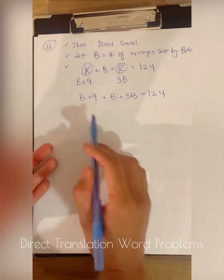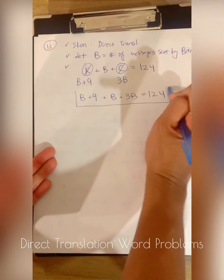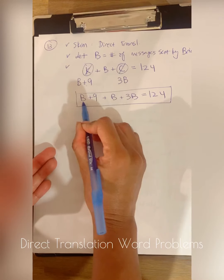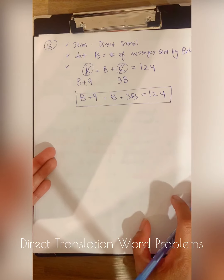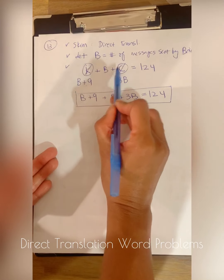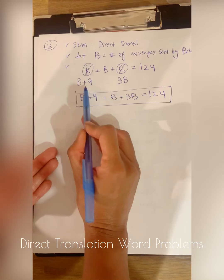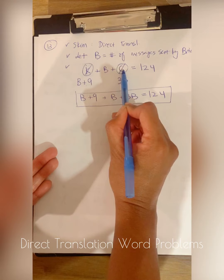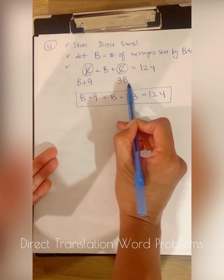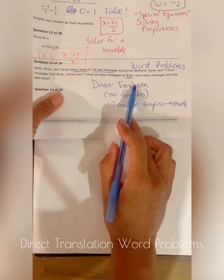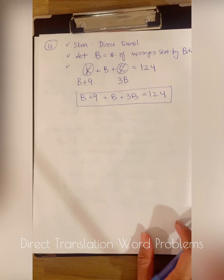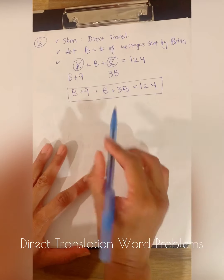So by doing that, I've now created one equation with the unknown values of B's. So instead of putting K plus B plus C, I know K represents B plus nine, and I know C represents three times B based on these words here. Now that I'm done translating English to math, now I'm going to solve this.